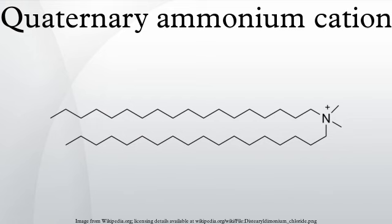In the 1950s, distearyldimethylammonium chloride was introduced as a fabric softener. This compound was discontinued because the cation biodegrades too slowly. Contemporary fabric softeners are based on salts of quaternary ammonium cations where the fatty acid is linked to the quaternary center via ester linkages. These are commonly referred to as betaine esters or ester quats and are susceptible to degradation, for example by hydrolysis.